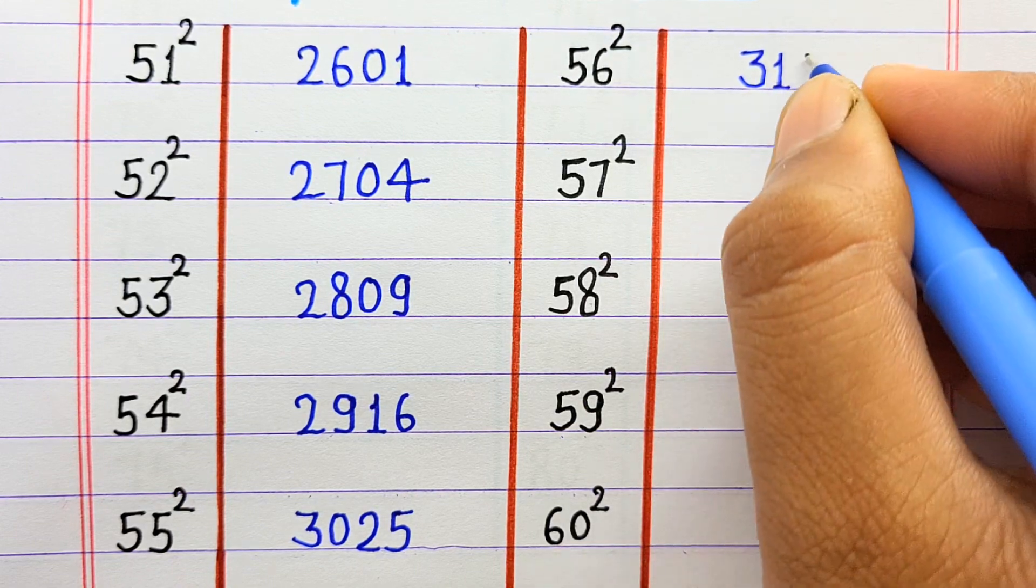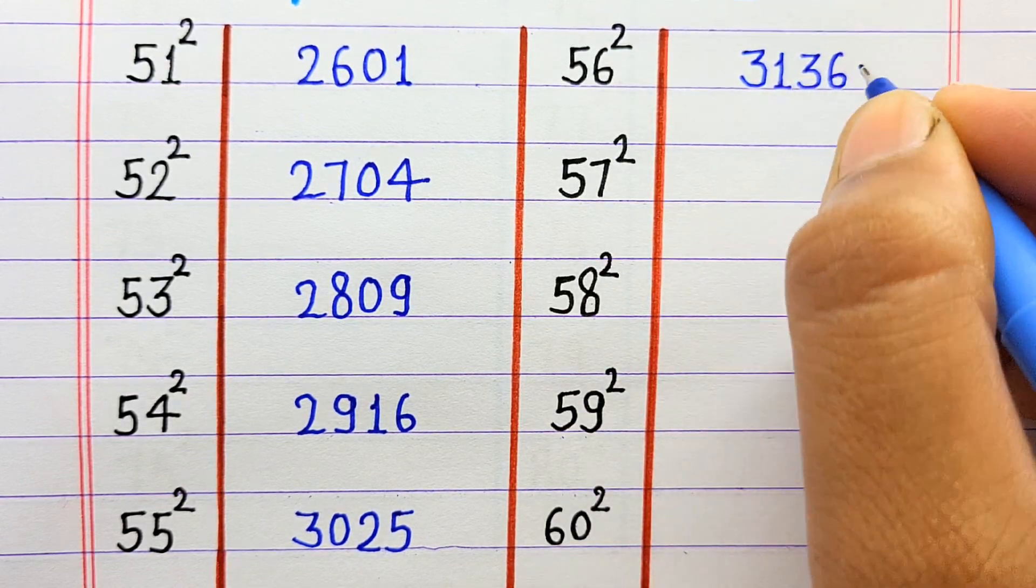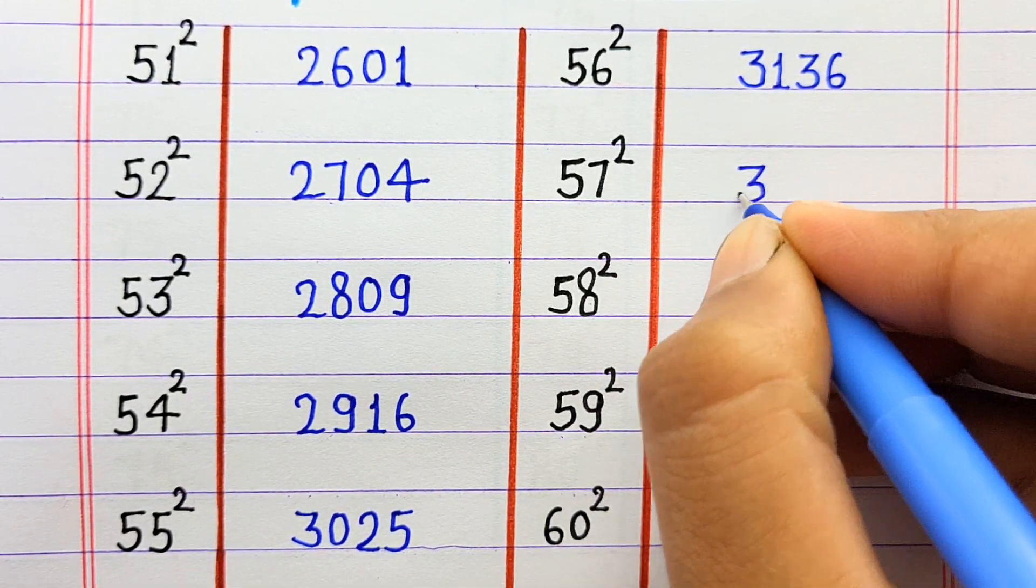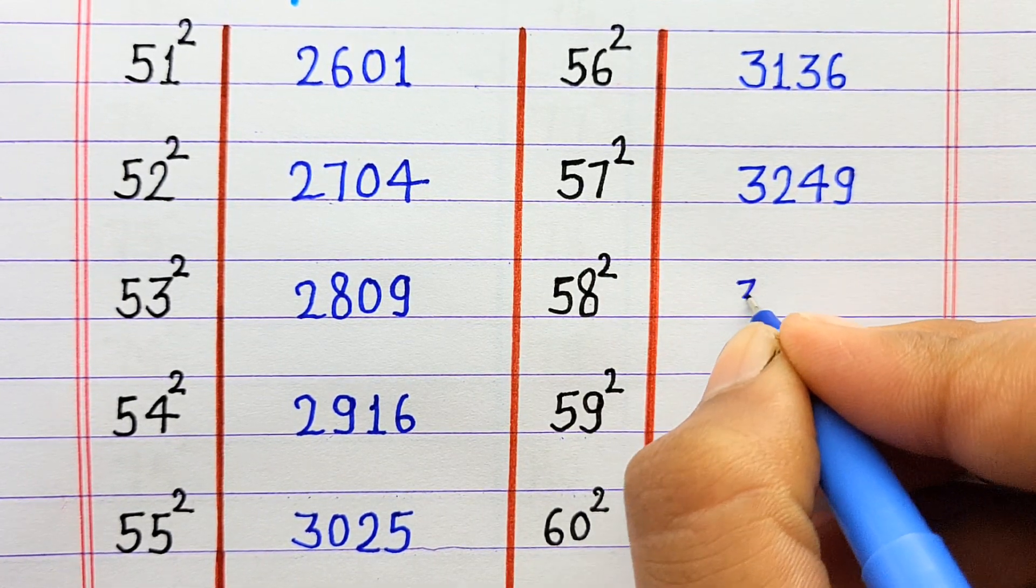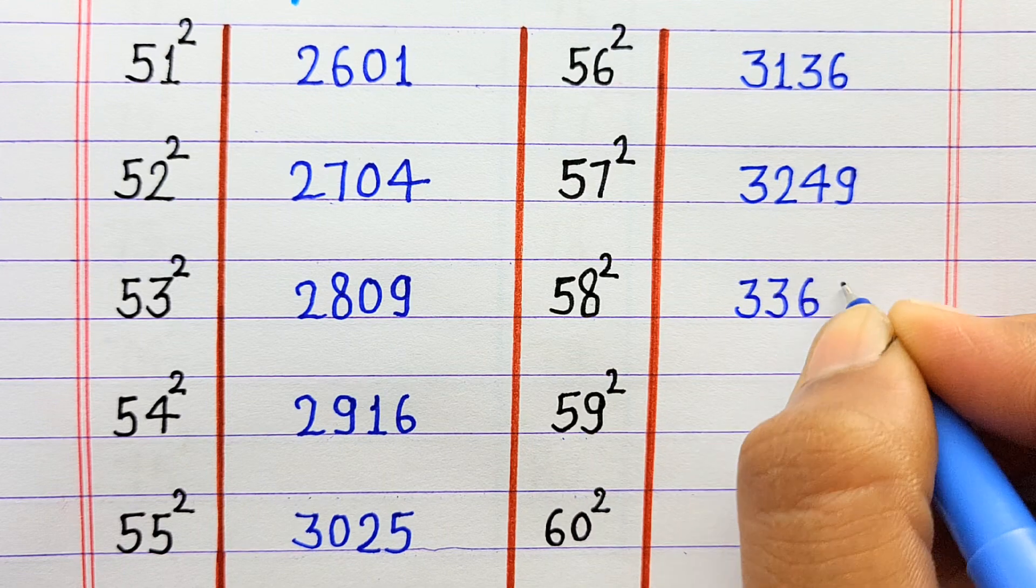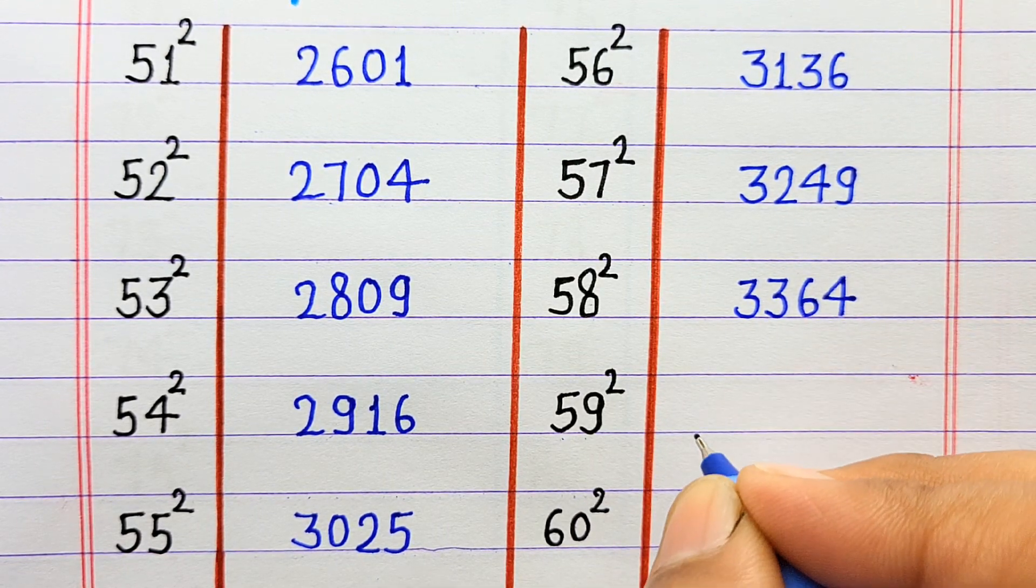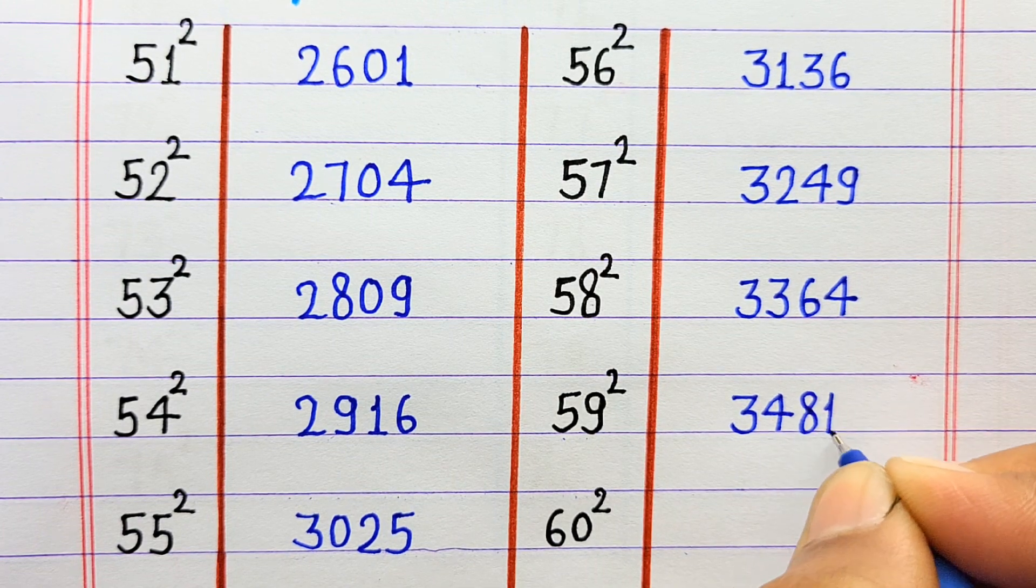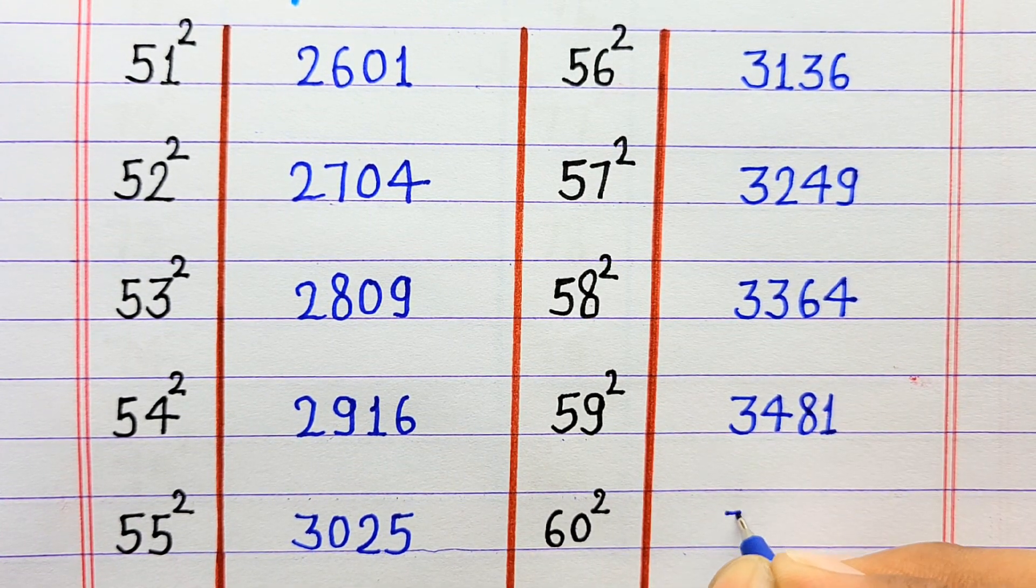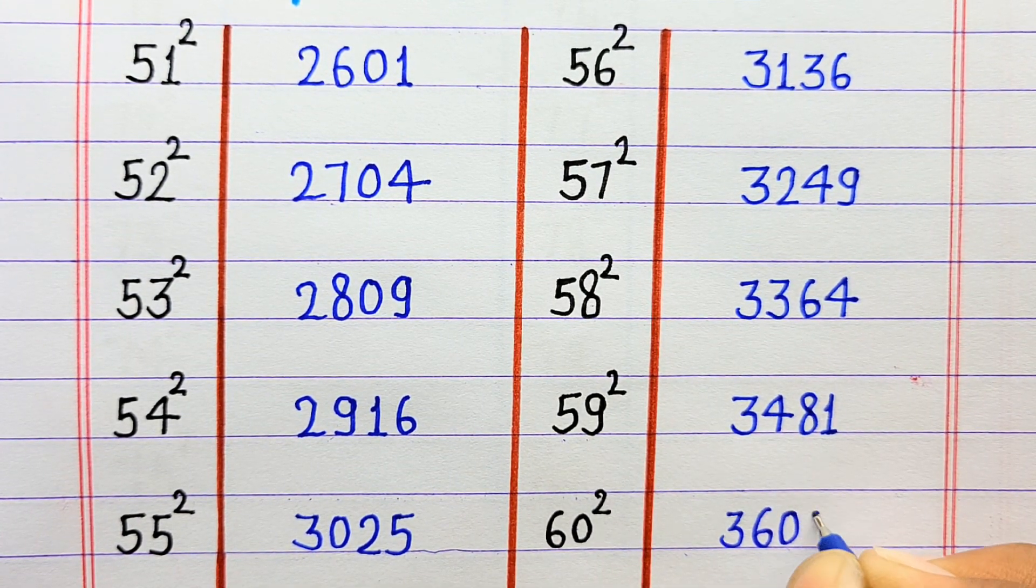57 ka square 3249, 58 ka square 3364, 59 ka square 3481, 60 ka square 3600.